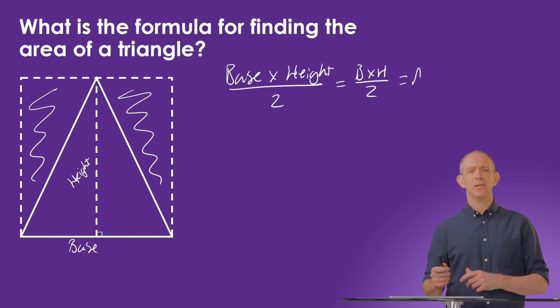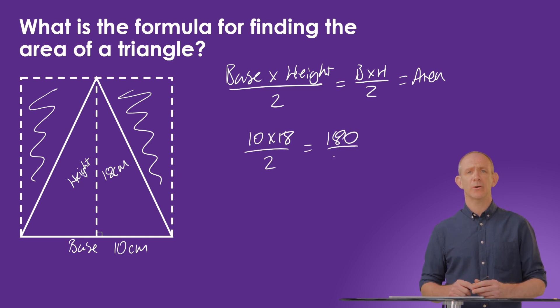In this case, if the base was 10 centimeters and the height was 18, we'd do 10 times 18, all divided by two, which is 180 divided by two, which equals 90 centimeters squared.